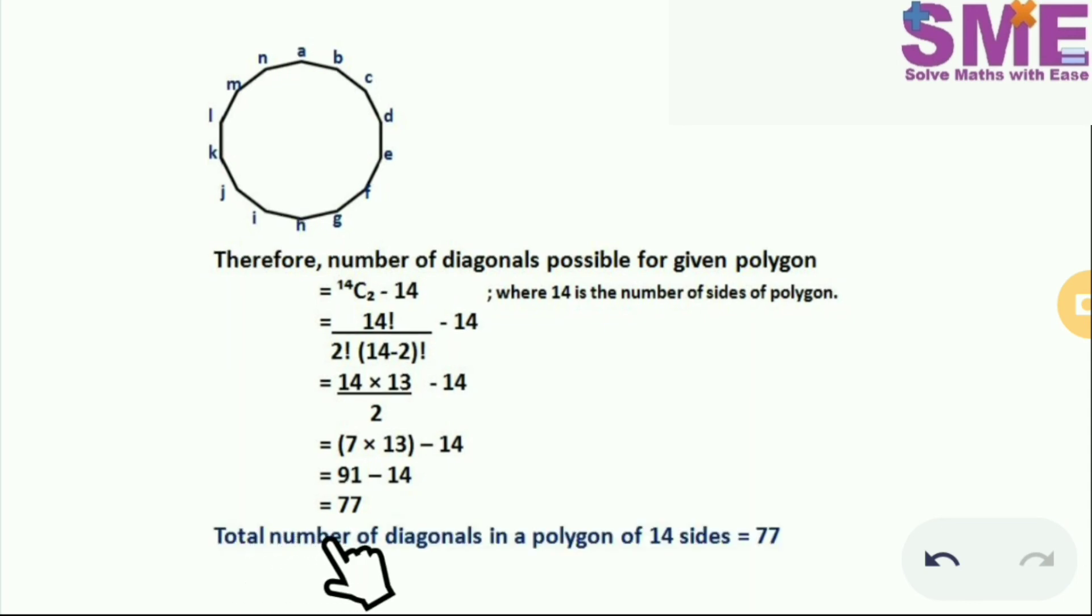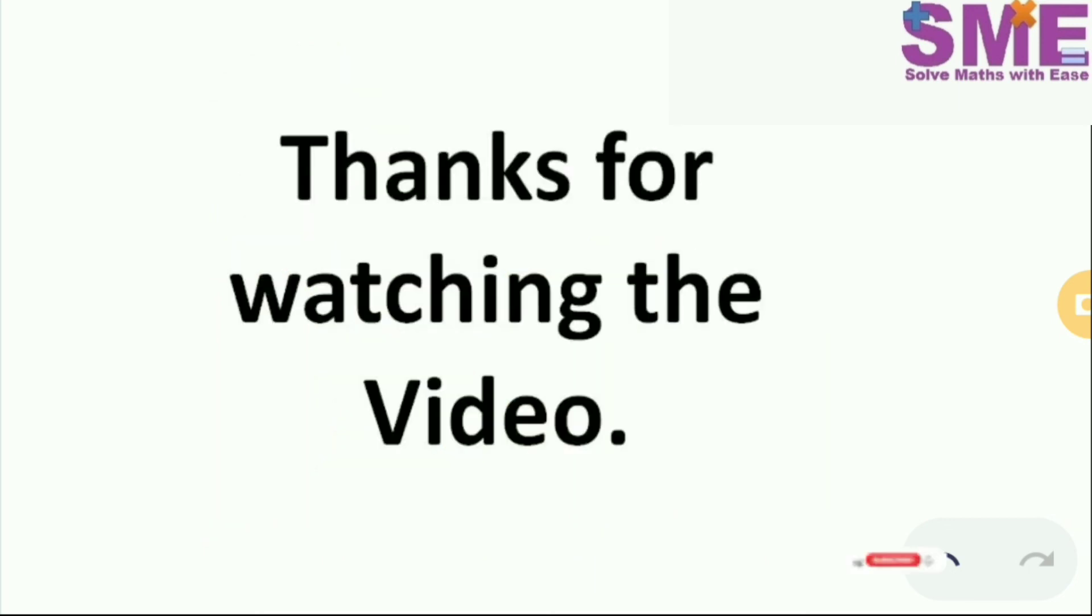The total number of diagonals in a given polygon of 14 sides equals 77.